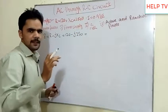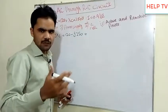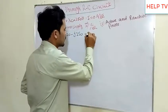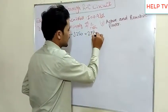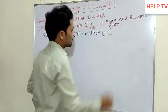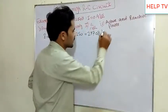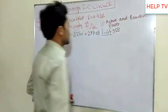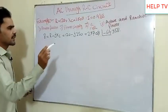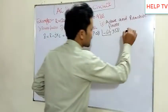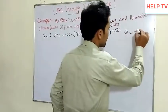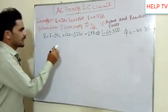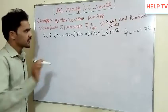When we calculate Z, we get the value in phasor form. The value is 277.08 at an angle of minus 64.358 degrees. This is the impedance value.